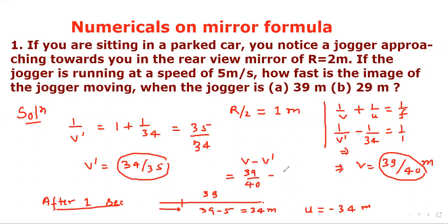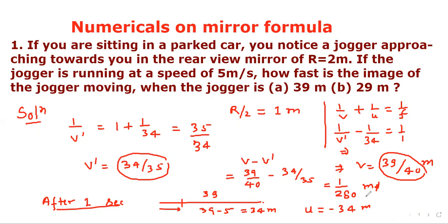Computing 39/40 − 34/35 gives 1/280 meter. So the speed of the image is 1/280 meter per second when the jogger is 39 meters away.